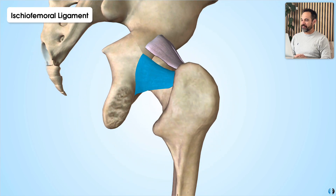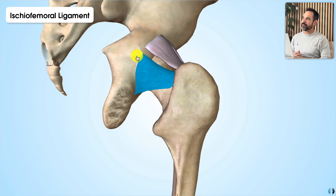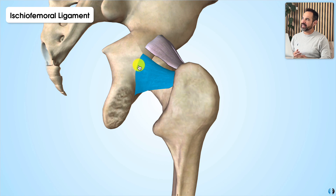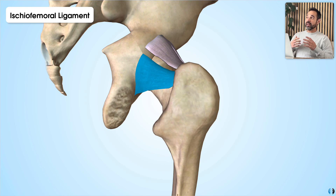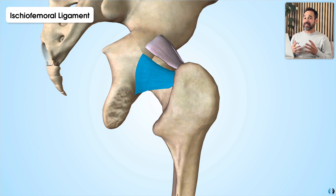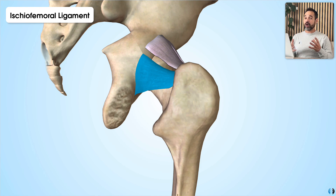Next, we have the ischiofemoral ligament, which connects the ischium to the femur. It originates from the ischial aspect of the acetabulum, moving in towards the greater trochanter. It's very triangular in shape, with a broad base on the ischial side and fibres that converge towards the greater trochanter. Its role is also in preventing hyperextension or posterior movement of the femur. Whilst it's the weakest of the three ligaments, it's reinforced by the fact that the other ligaments, including the iliofemoral ligament, have similar roles.